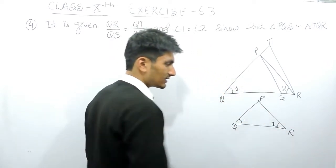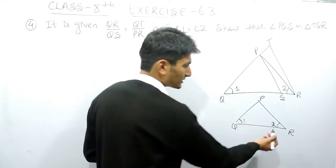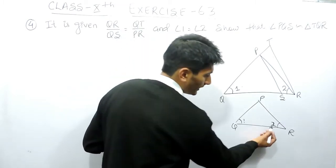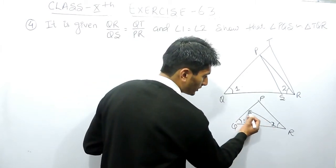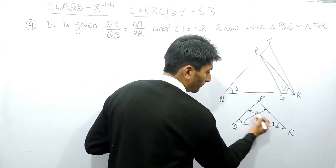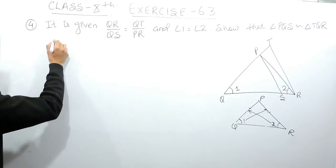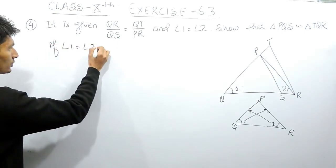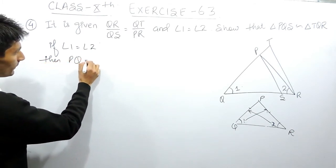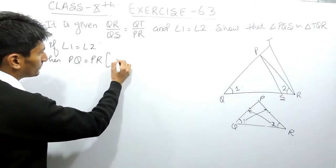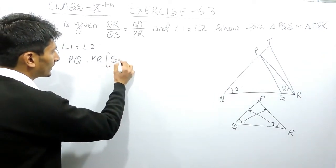We know that if in a triangle two angles are equal, then their opposite sides are also equal. So if angle 1 is equal to angle 2, then the side opposite to angle 1 and the side opposite to angle 2 must also be equal. We can conclude that side PQ must be equal to PR, because the property of a triangle states that sides opposite to equal angles are also equal.